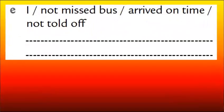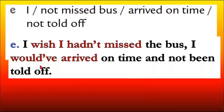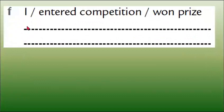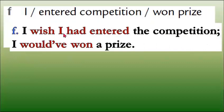Sentence E: 'I not missed the bus — arrived on time, not told off.' Answer: 'I wish I hadn't missed the bus — I would have arrived on time and not been told off.' Sentence F: 'I entered competition — won prize.' He regrets not entering, so: 'I wish I had entered the competition — I would have won a prize.'